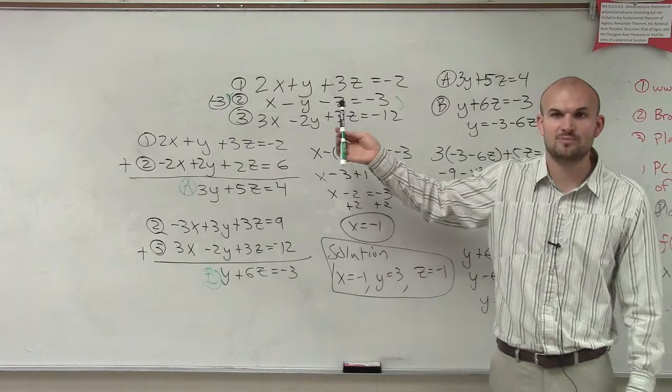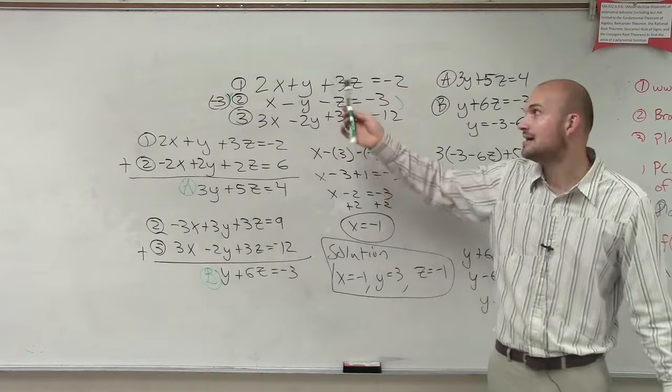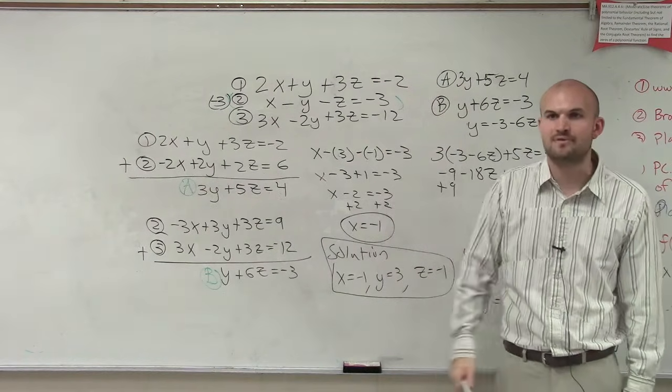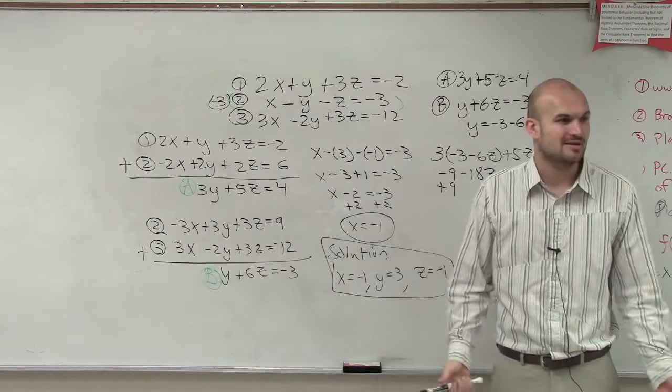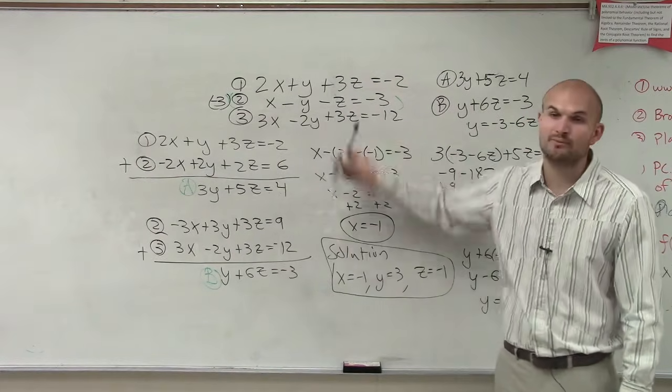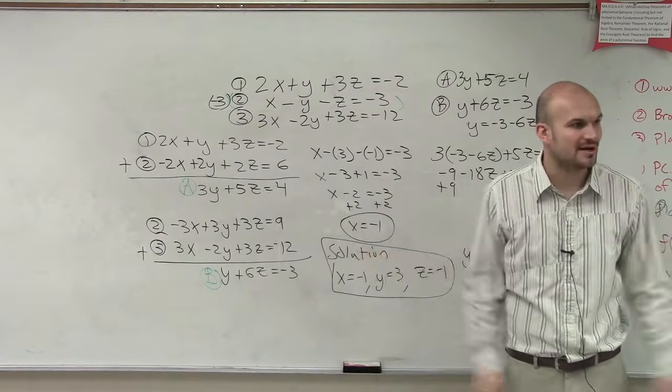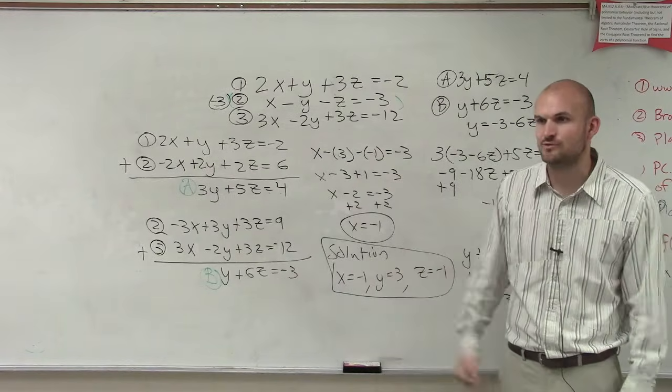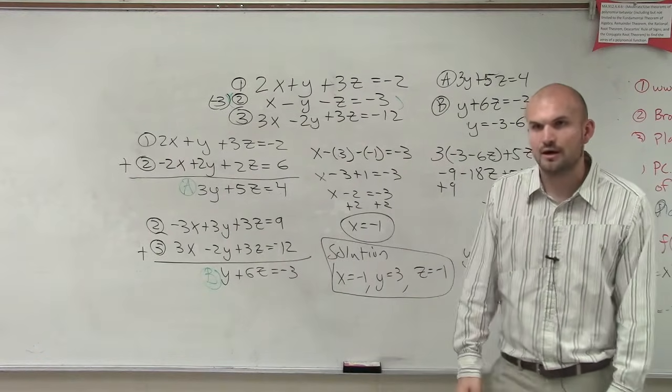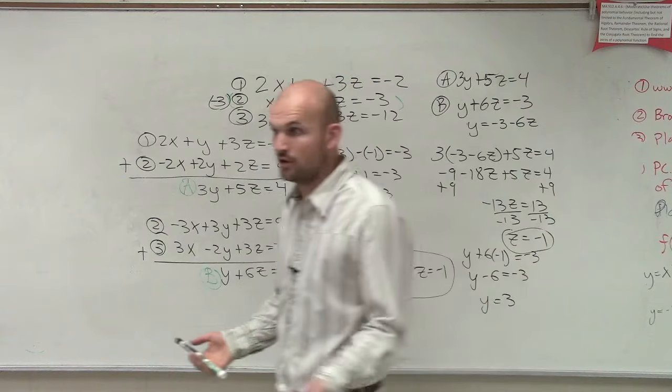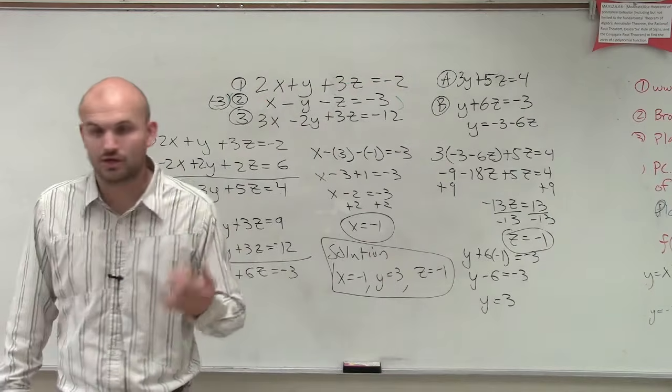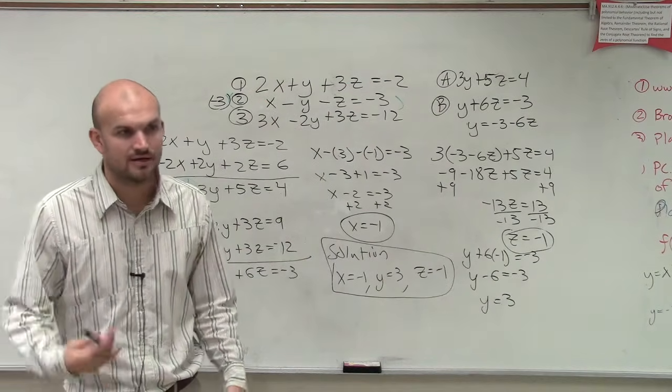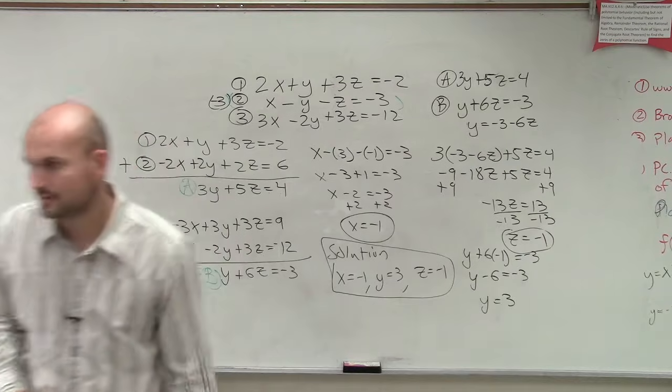So probably even eliminating the z probably would have been the easiest. Because you only have to multiply the middle equation by three once, and then you add that to both of those top and bottom equations. So I probably, if I was doing this problem, I probably would have multiplied by z. But it doesn't matter. Either way, you're going to get the same answer whichever way you choose. All right? So just pick a variable, preferably the variable that has a coefficient of one or negative one, and roll with it. All right? Got it.